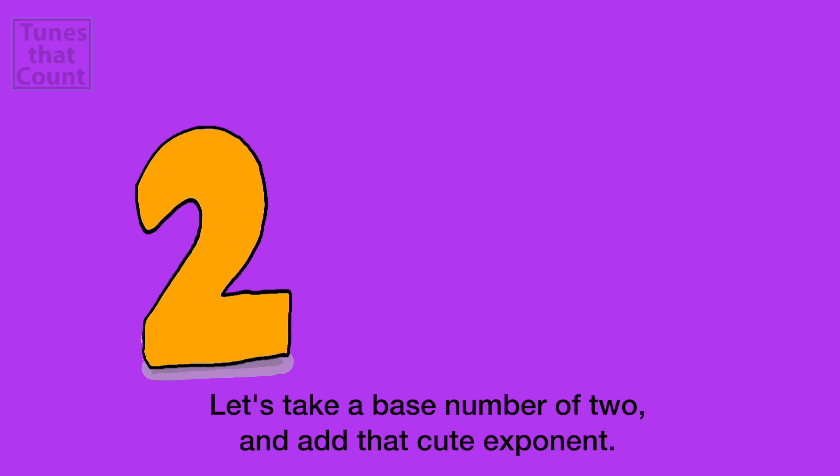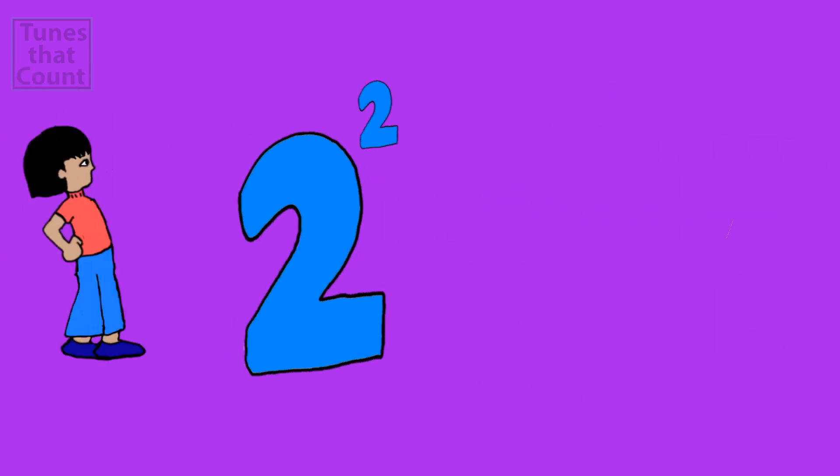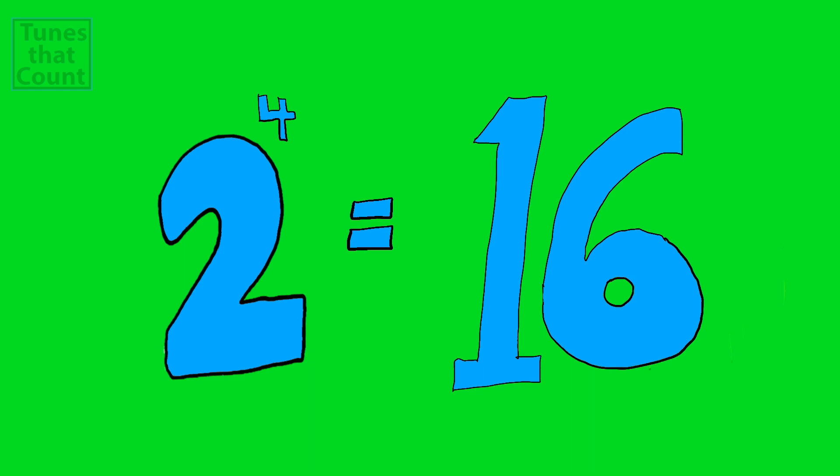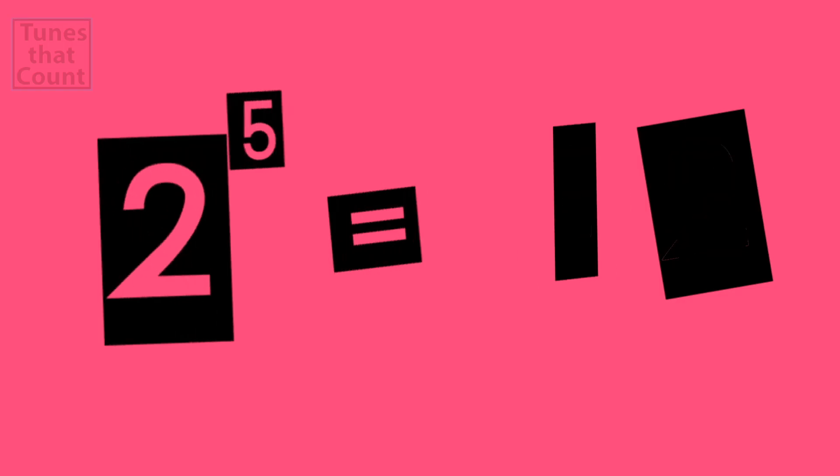Let's take a base number of 2, and add that exponent. 2 to the power of 2 is 4, and 2 to the power of 3 is 8. 2 to the power of 4 is 16, and 2 to the power of 5 is 32.